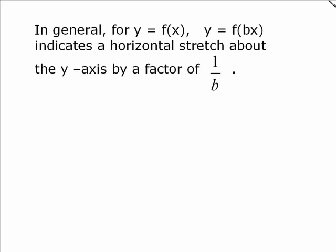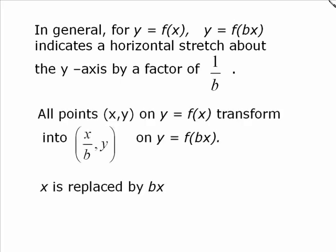So this is telling us that when you replace x with bx, so the factor we usually call it b, sometimes the letter will change, will be right in front of the x, it will be the coefficient of the x term, and it's always the reciprocal. So 1 over b. So as we've seen before, horizontal transformations are always opposite to what they appear to be. So all points (x,y) on y equals f(x) will transform into (x/b, y) on y equals f(bx). So you see that factor of 1 over b will be multiplied by the x. And the other observation there is that x is replaced by bx in the equation. So it's a little tricky to get this down. Usually the horizontal stretches are the part that people struggle with the most.